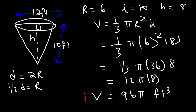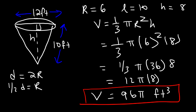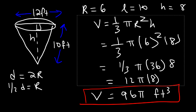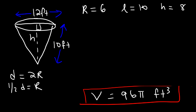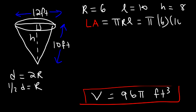Now let's calculate the lateral area: π r l, with r = 6 and l = 10. 6 times 10 is 60. So the lateral area is 60π square feet.